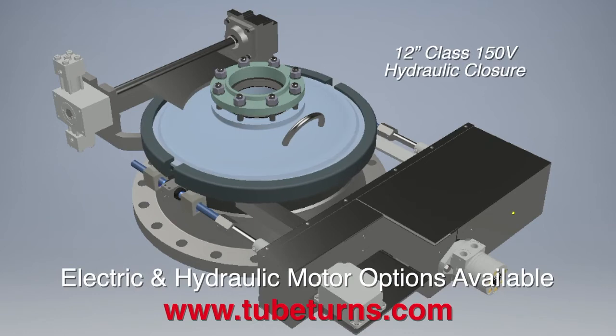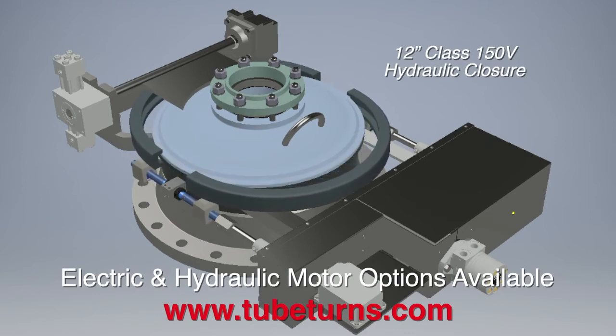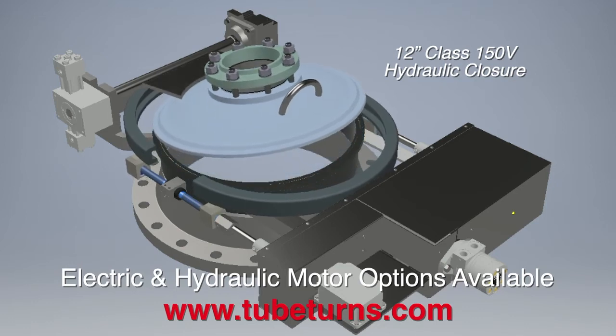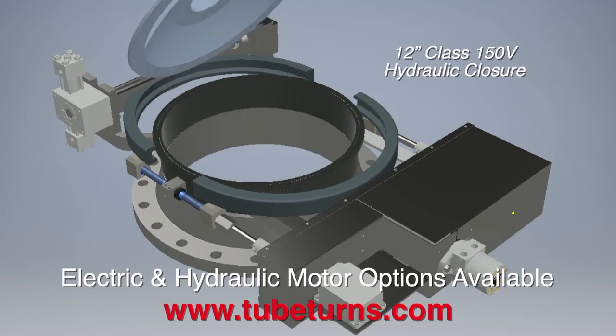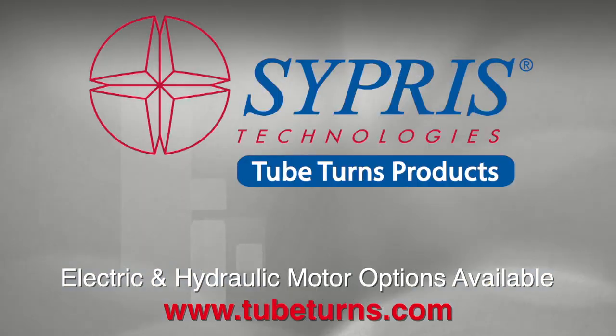Closures installed in high-pressure class working environments such as ASME 900, 1500, and 2500 that require high torque for closure operation are offered with a hydraulic driven mechanism. Closures can be shipped with a hydraulic power pack and pump or integrated into the customer's existing hydraulic system.